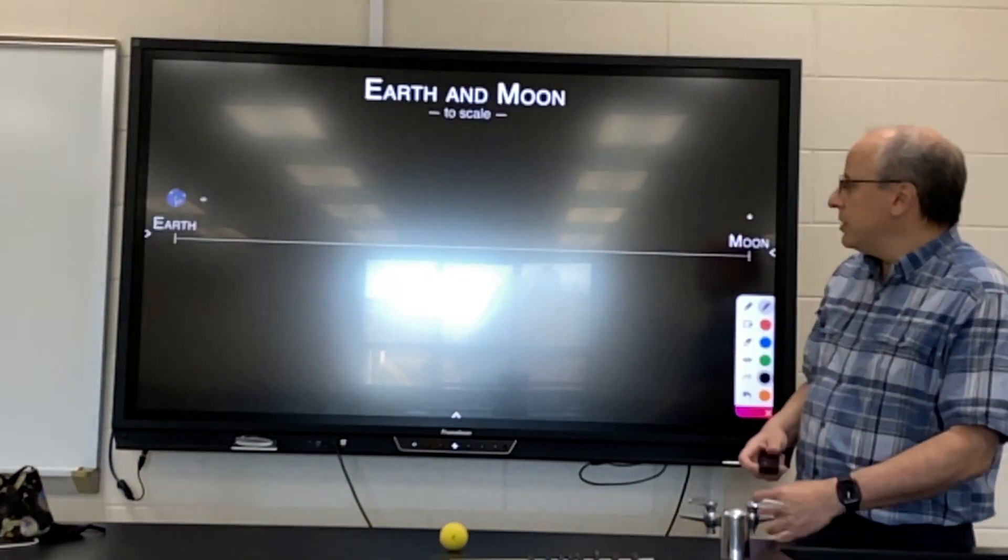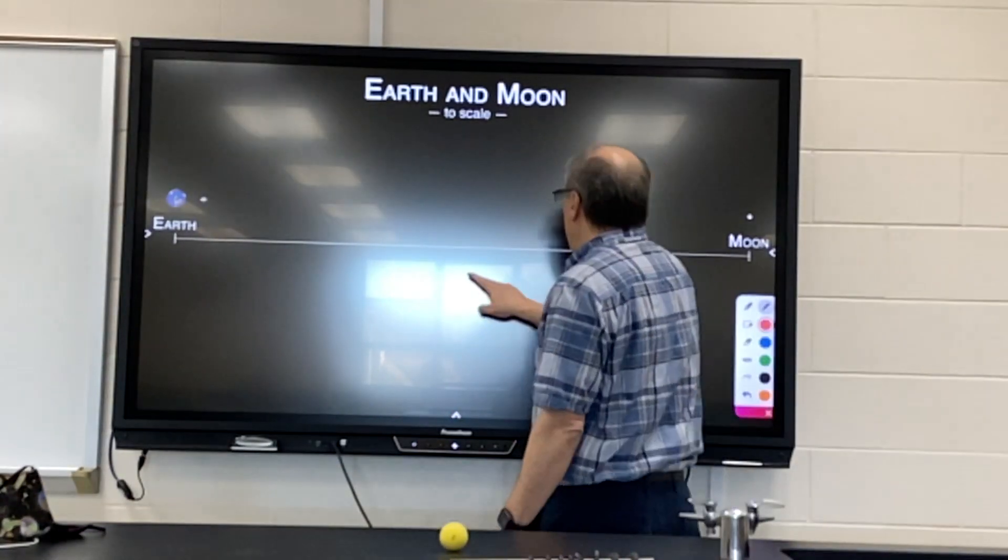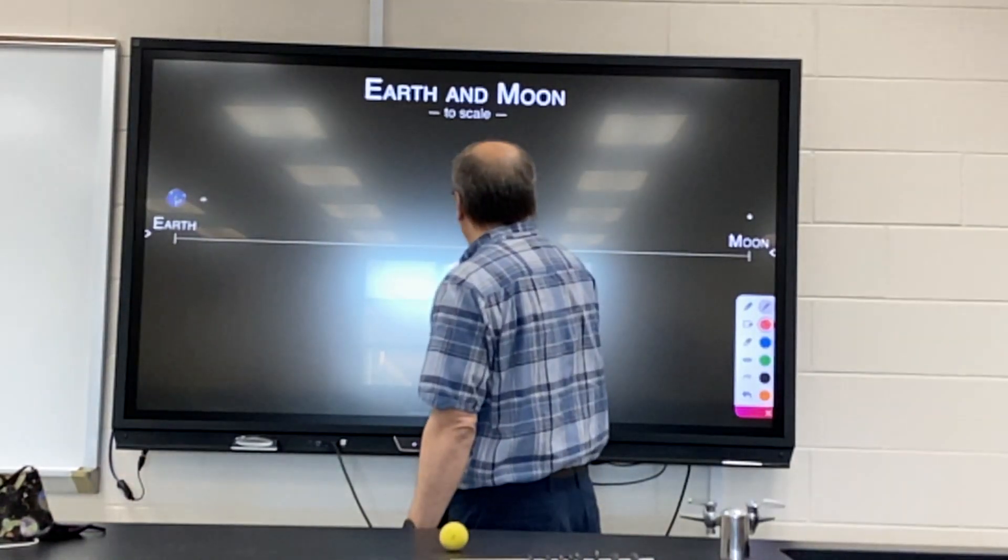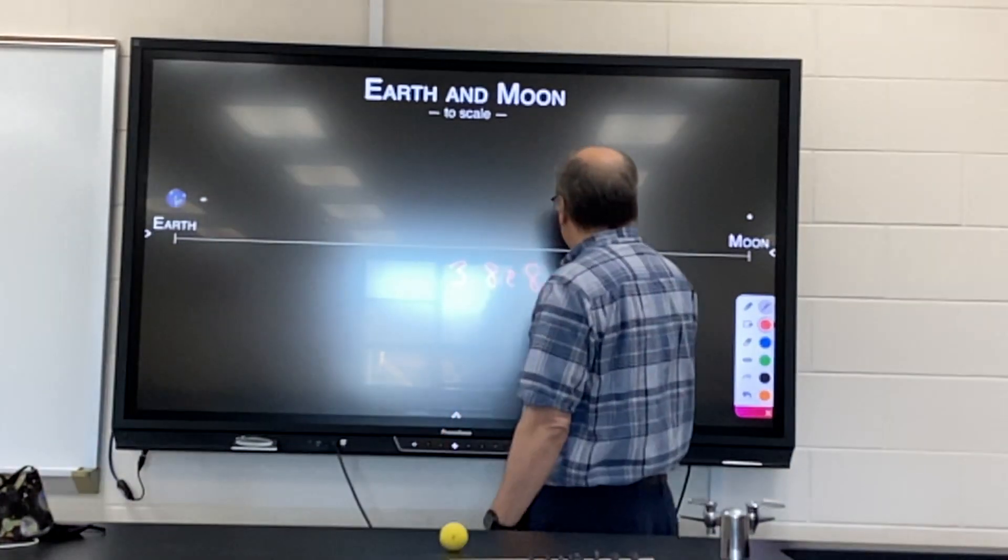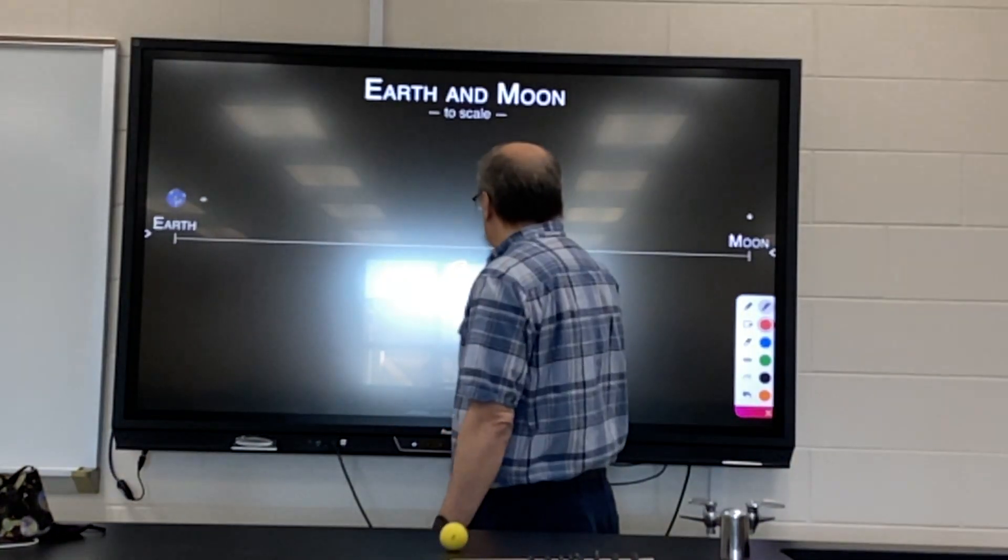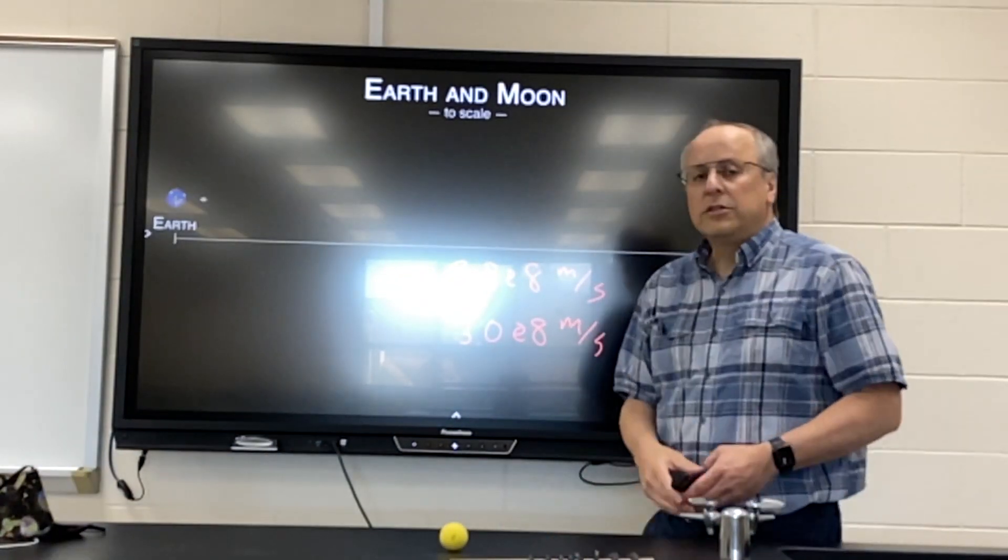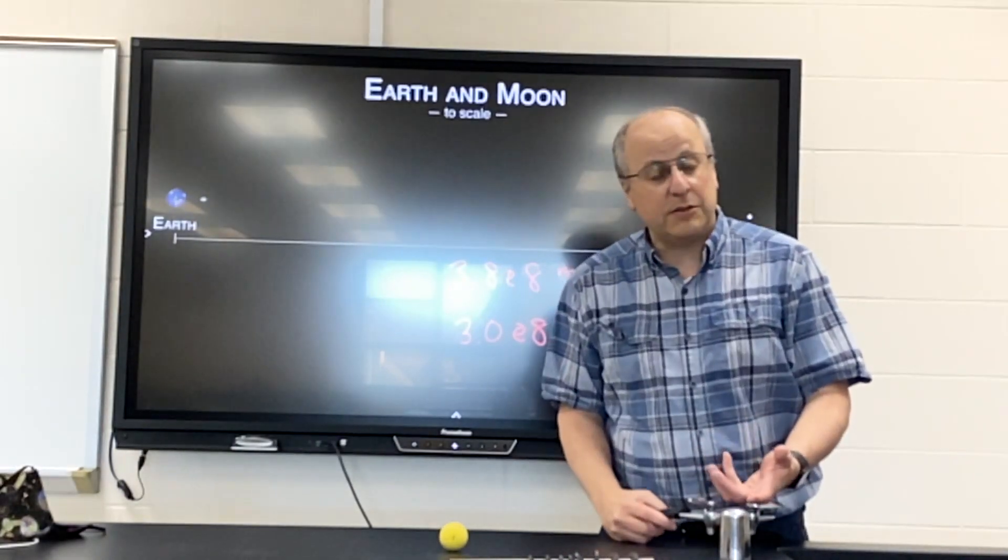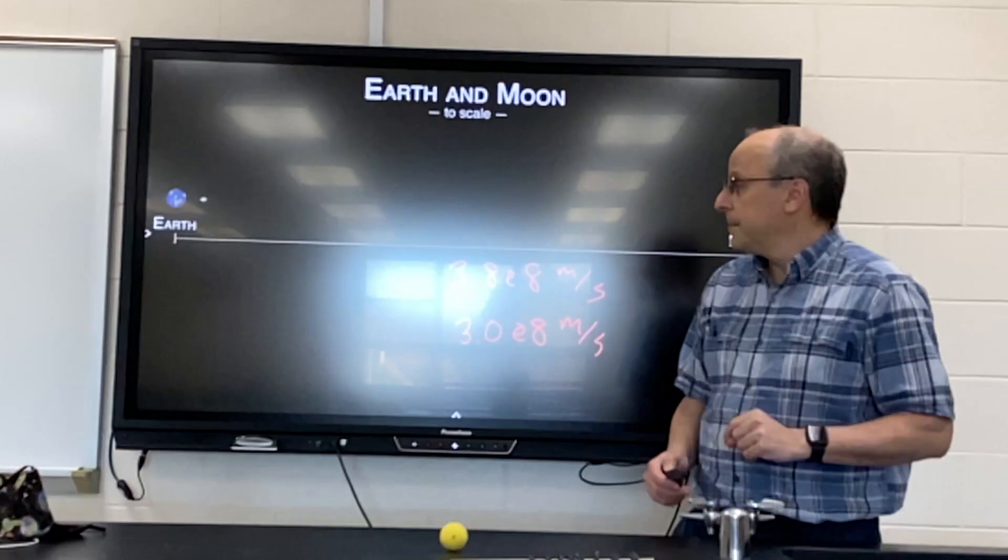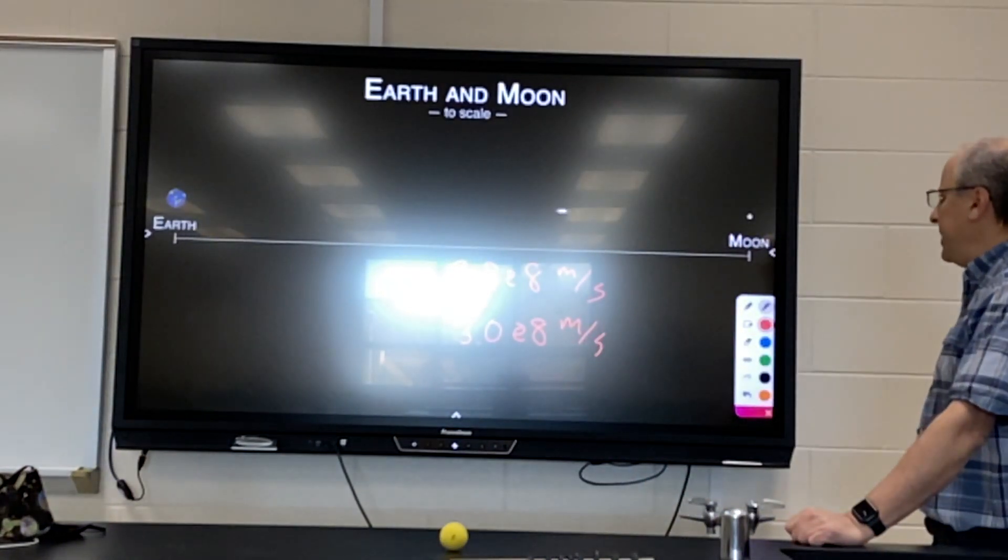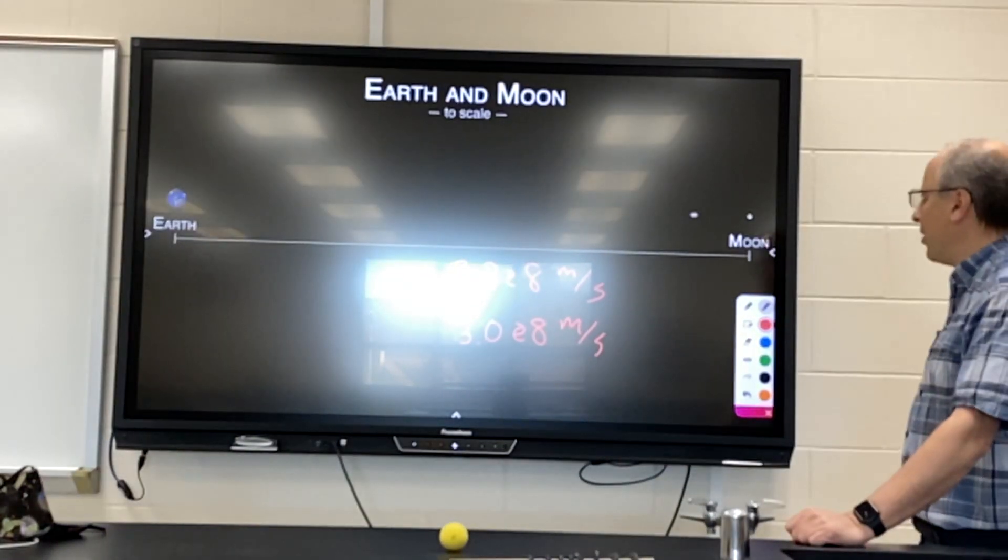How fast does it travel? Well, if we look at the distance between the Earth and the Moon, we know that they are 3.8 × 10^8 meters apart, and light is traveling about 3 × 10^8 meters per second. So it could traverse the distance between the Earth and the Moon in about one second.